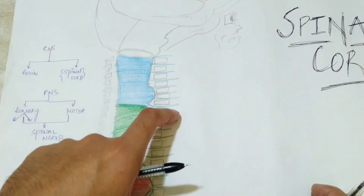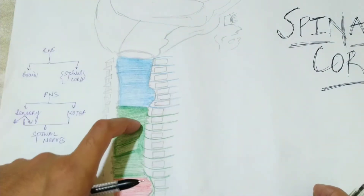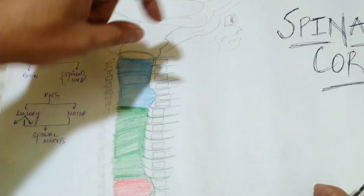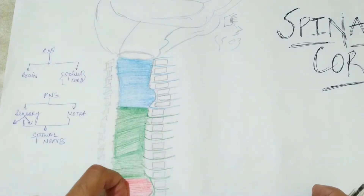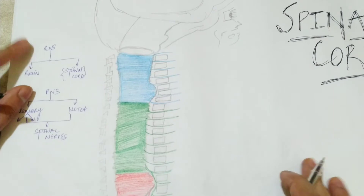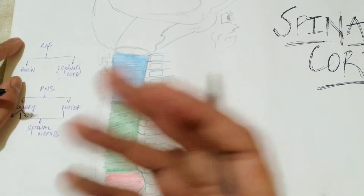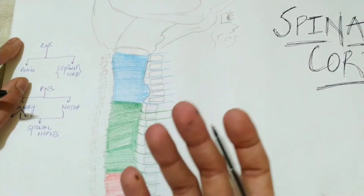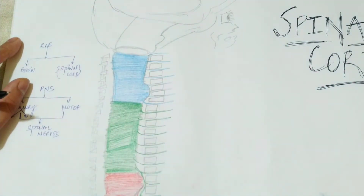We are now discussing our CNS — that is the brain and the spinal cord, which are parts of the central nervous system. Let's begin with the gross anatomy of the spinal cord: from where it begins and where it ends.